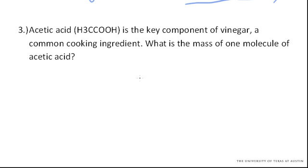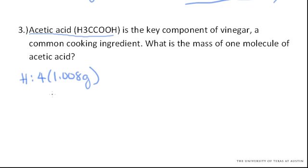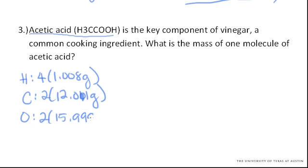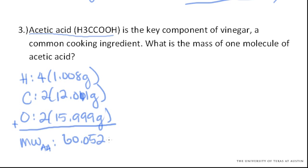What about this last one? Acetic acid is the key component of vinegar, a common cooking ingredient. What is the mass of one molecule of acetic acid? First we need to find the molecular weight of acetic acid. Molecular weight, much like atomic weight, corresponds to the mass of one mole of whatever you're looking at. Since acetic acid is a molecule, you find that molecular weight by summing up the atomic weights of all the atoms in the molecule. For hydrogen, we have 4 at 1.008 grams; carbon, 2 at 12.011 grams; oxygen, 2 at 15.999 grams. When you add that up, the molecular weight of acetic acid is 60.052 grams per mole.